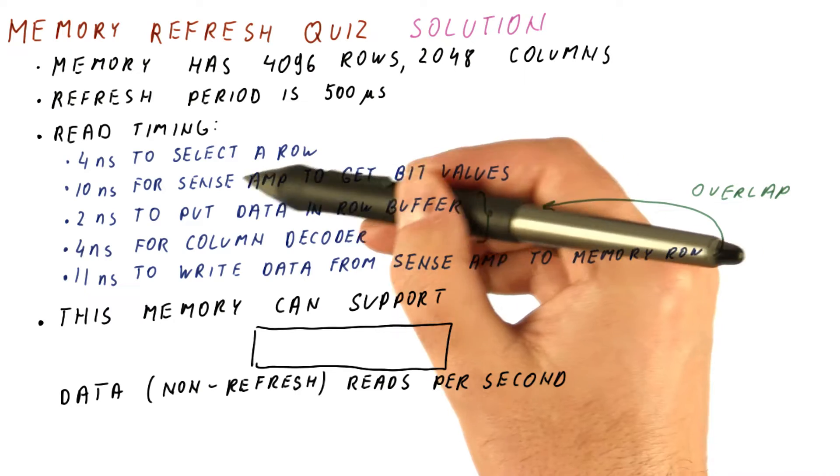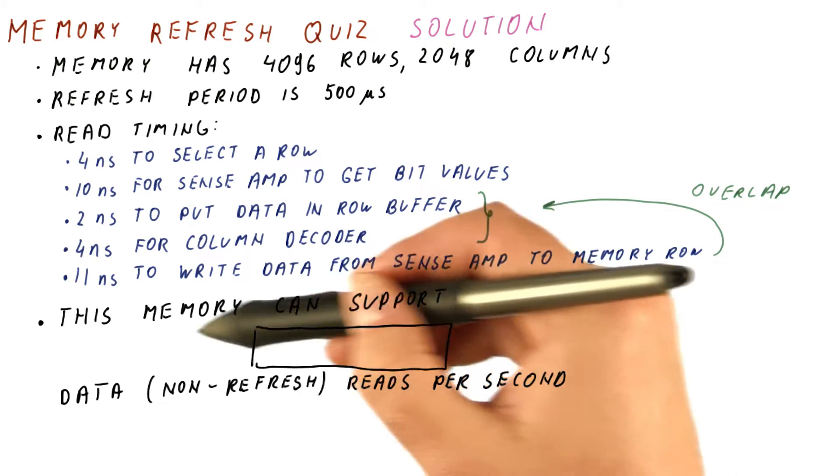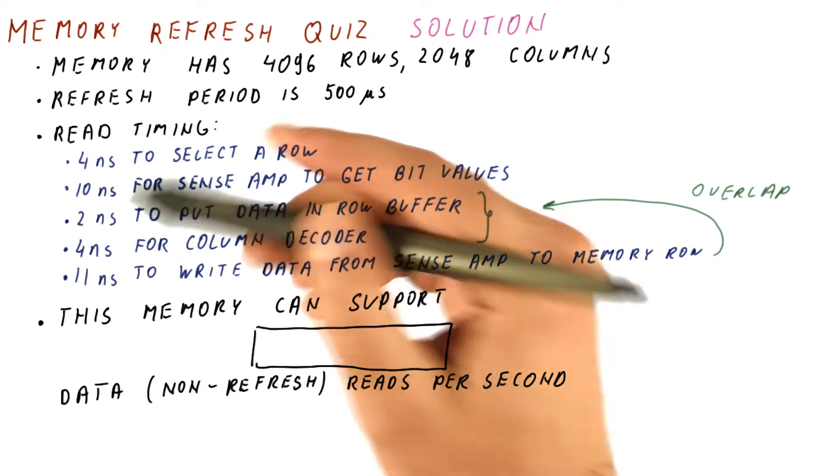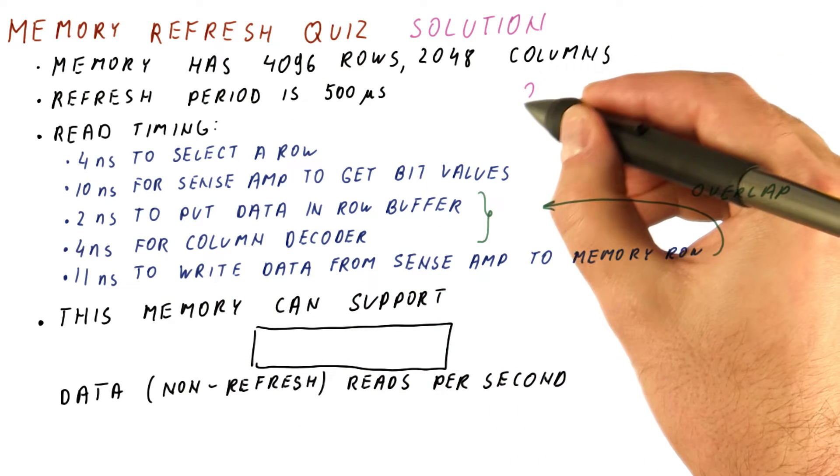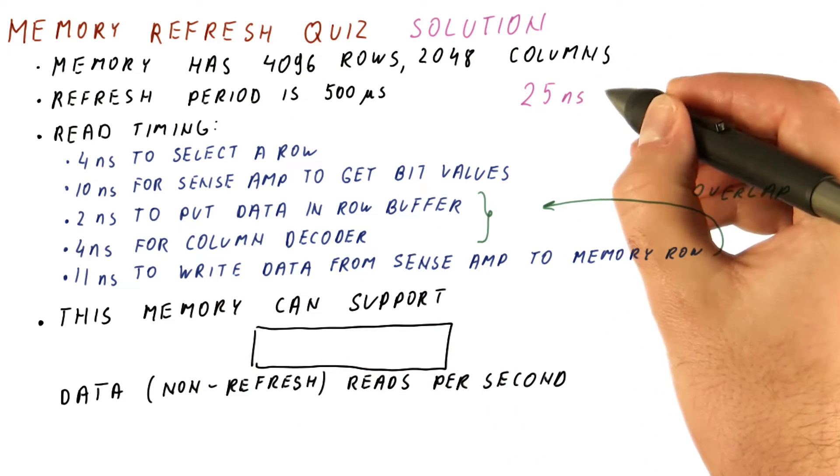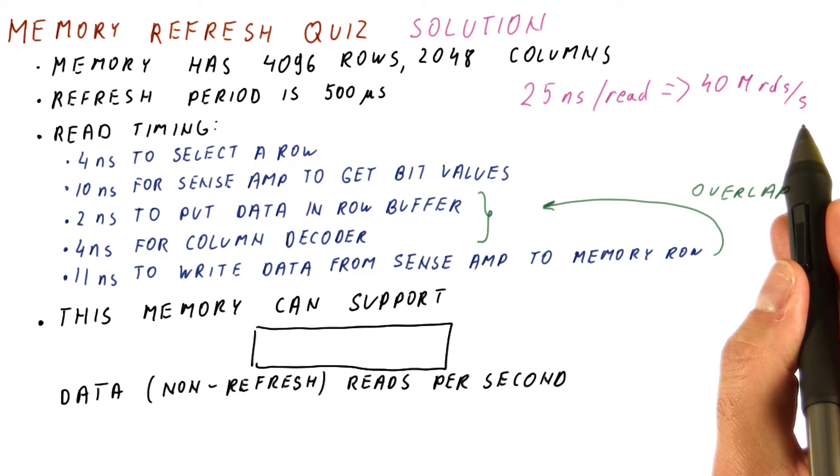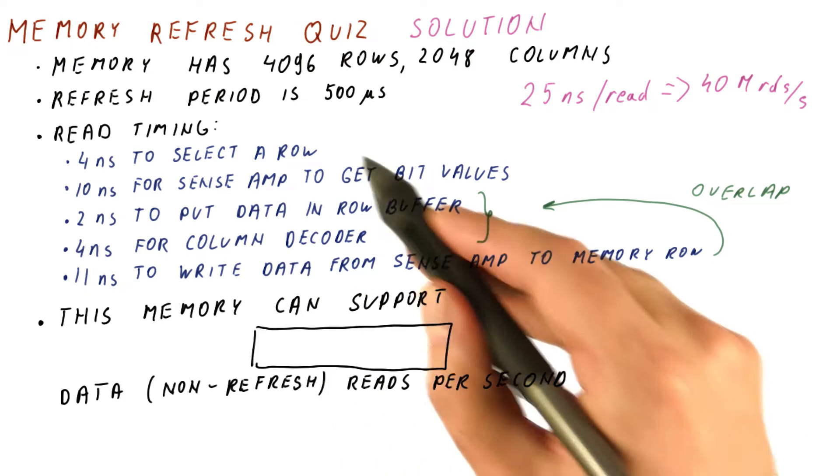During this time, the row needs to remain selected, so the new read really cannot begin until 4 plus 10 plus 11 nanoseconds into it. So the read takes 25 nanoseconds, and that means we could be doing 40 million reads per second if all we had to do is do reads.